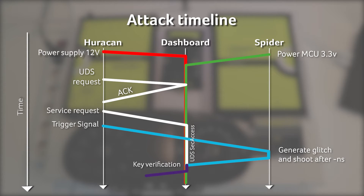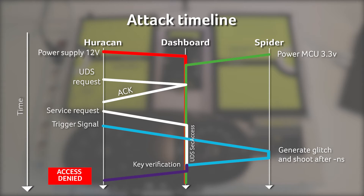The result can be: no message from the dashboard, indicating that the controller crashed or reset; a wrong password message, indicating that the glitch had no effect; or a message containing the result of the protected request, indicating that the controller was glitched successfully.